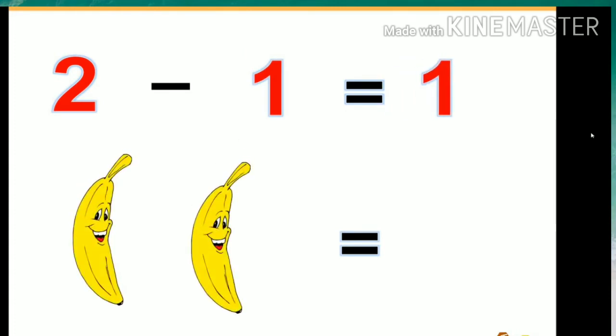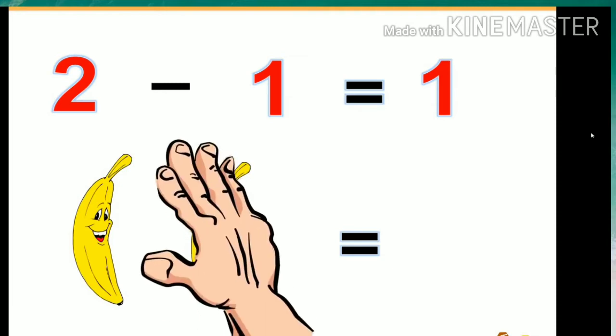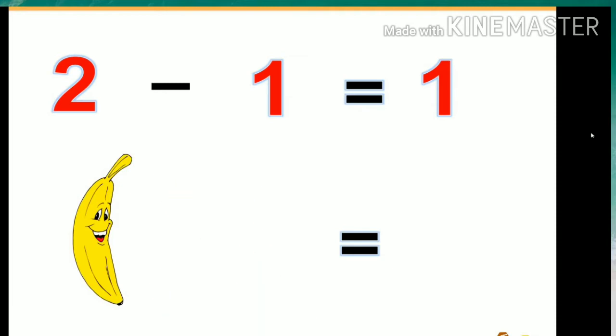2 minus 1 equals 1. If we have two bananas and we take away one banana, we have only one banana left.